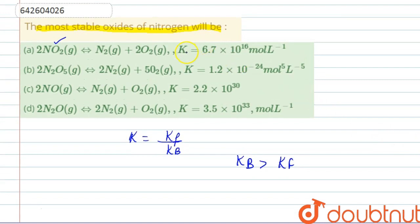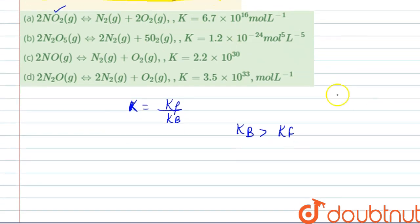We are given equilibrium constant K and we have to tell which is the most stable oxide of nitrogen. From here we can say that higher will be K, lower will be the backward shifting of reaction.